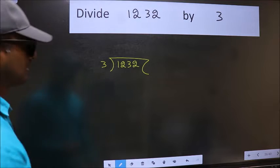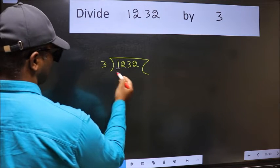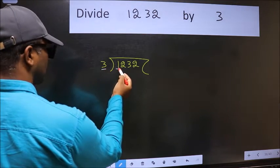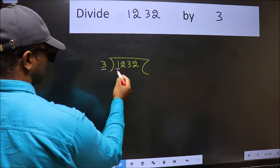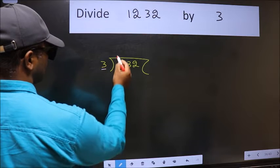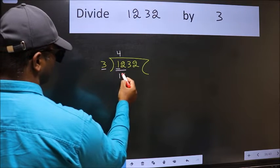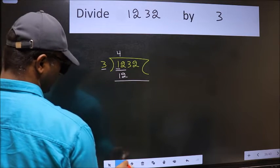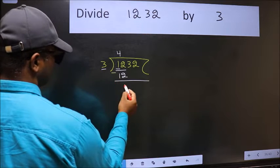Next, here we have 1 and here 3. 1 is smaller than 3, so take 2 numbers, 12. When do we get 12 in 3 table? 3 fourths 12. Now we should subtract. We get 0.